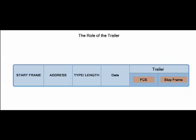The trailer is used to determine if the frame arrived with any errors. Error detection is accomplished by having the source host calculate a logical or mathematical sequence based on the content of the frame and placing that sequence in the frame check sequence field. The destination host will calculate its own check sequence and compare it to the values stored in this field. If these values do not match, then there was an error and the frame is discarded. The stop frame is optional and is used when the length field is not used.